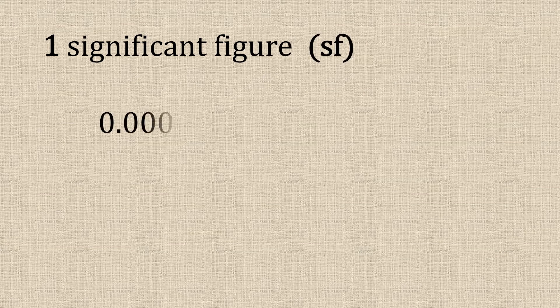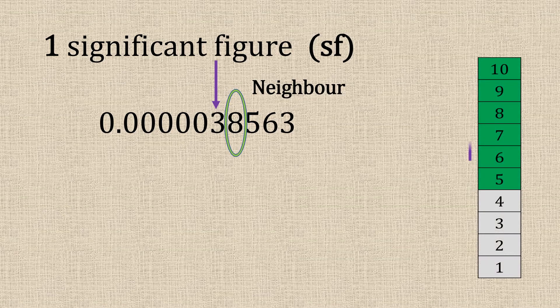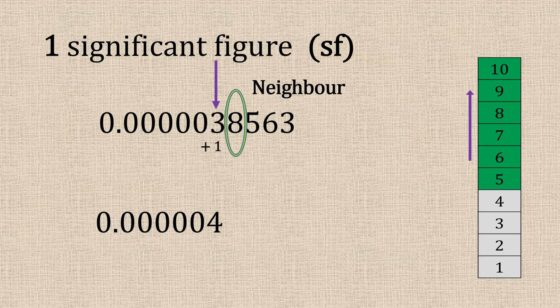One significant figure. So here's our number. There's our first significant figure. The neighbour is eight. So we have a look. That's a high five. So we're going to add one. And there's our answer.